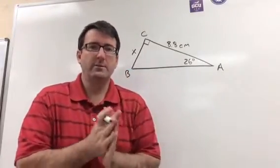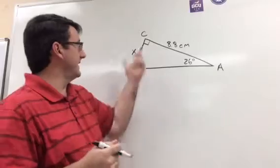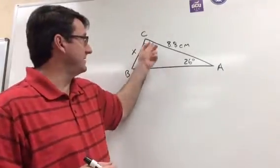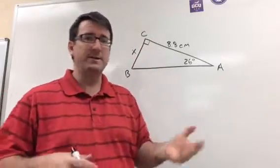Alright, number one. We're given this triangle and we're asked to find this length x. First thing we need to notice here is that this is a right triangle, so we don't need to use law of sines or law of cosines. We can just use SOHCAHTOA, right triangle trig.